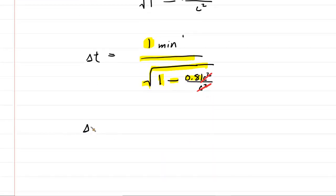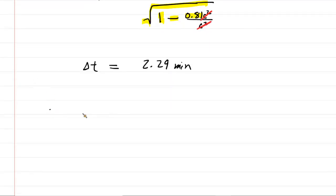So the time interval measured by someone moving with respect to the clock is longer. It's 2.29 minutes. Now we can calculate the heart rate as measured by that Earth-bound observer. The heart rate is simply the 70 beats of the astronaut's heart divided by this new time interval as measured by that Earth-based observer.